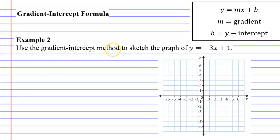Example 2, use the gradient intercept method to sketch the graph of y equals negative 3x plus 1.